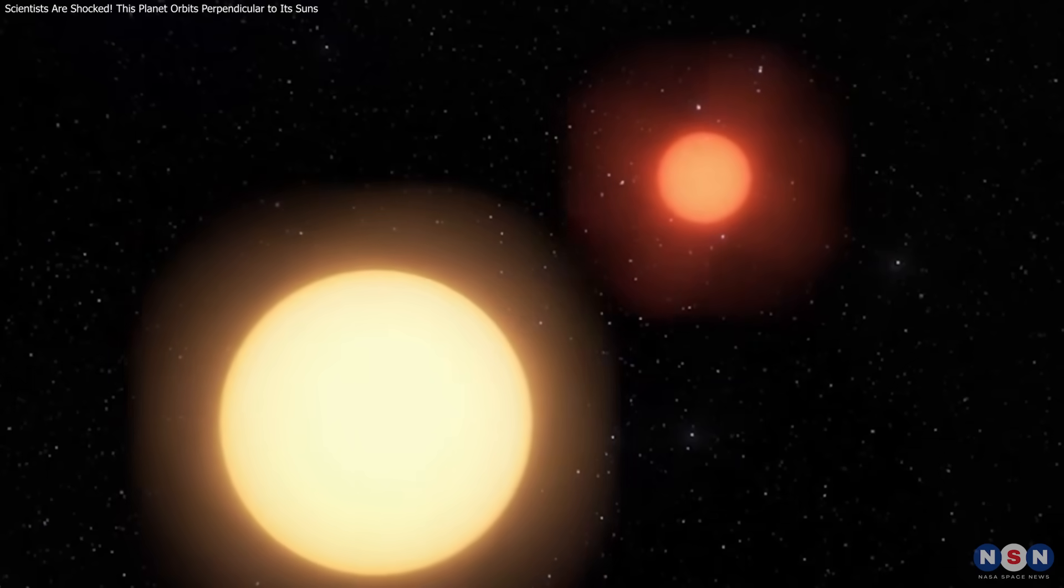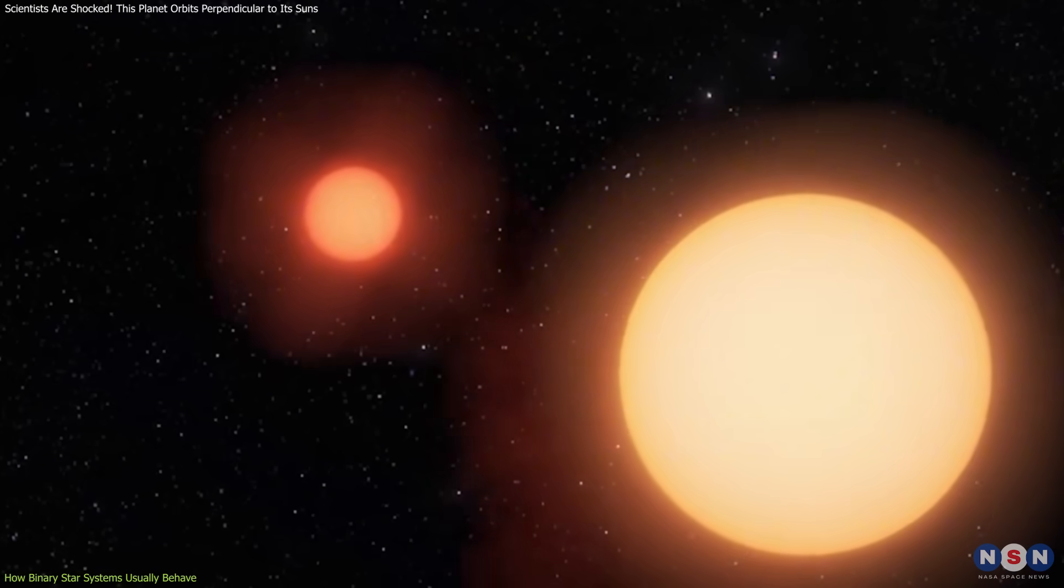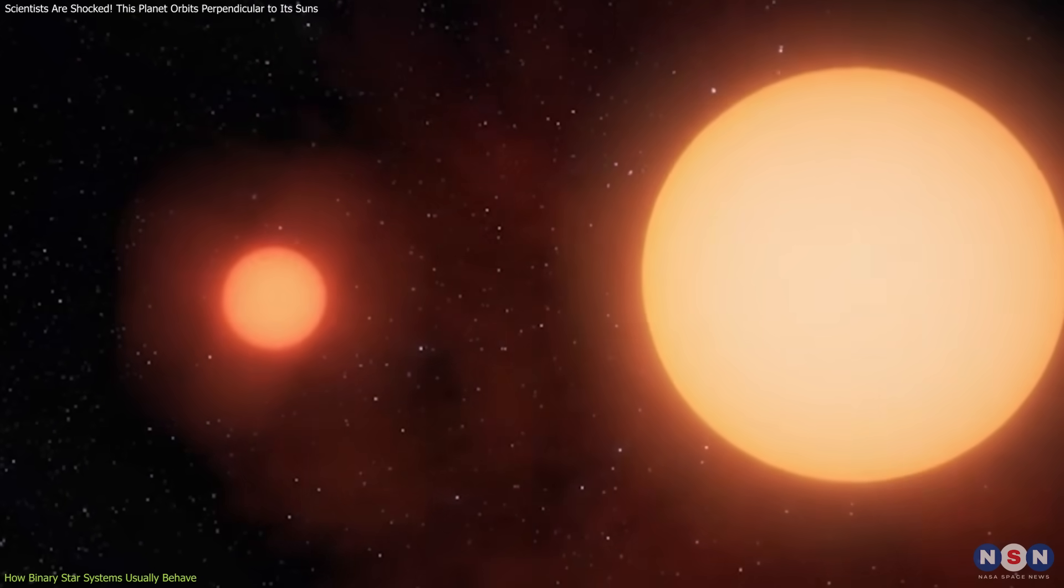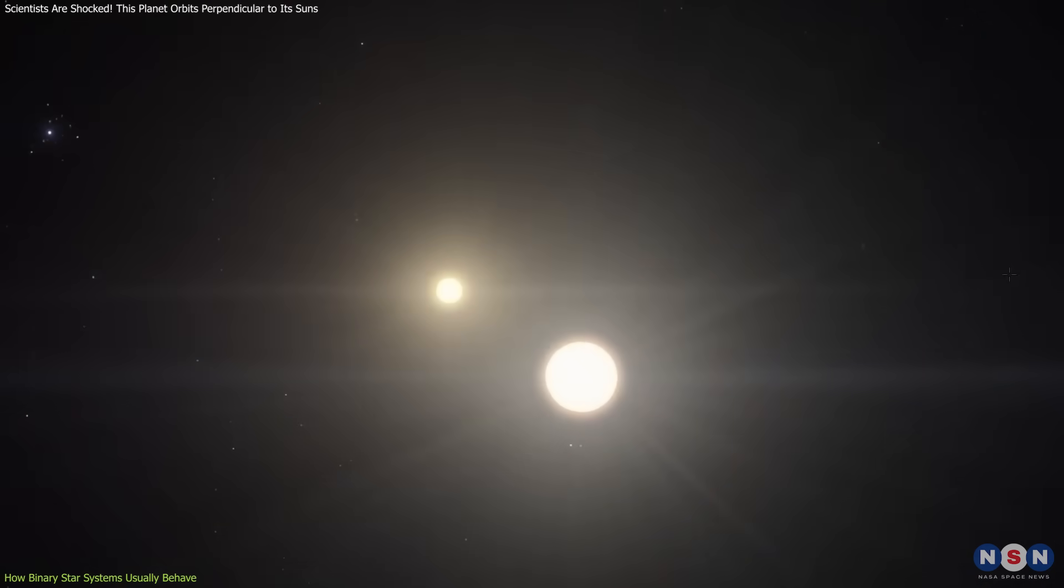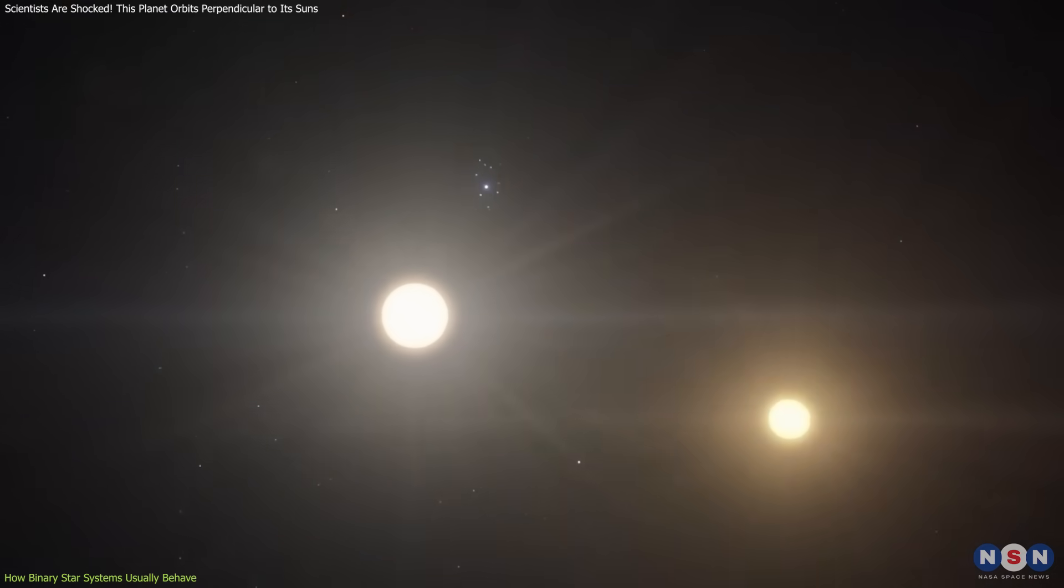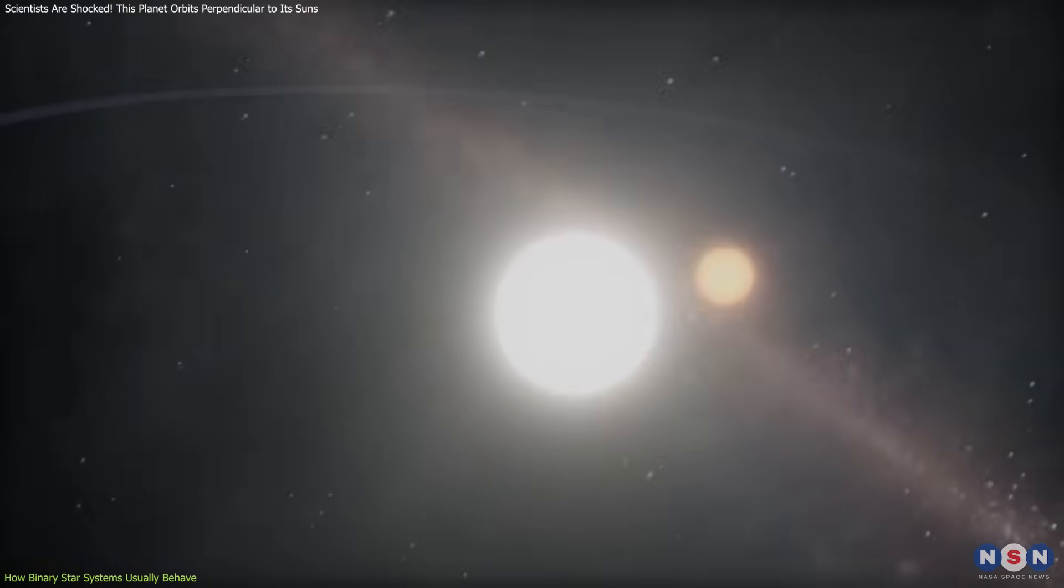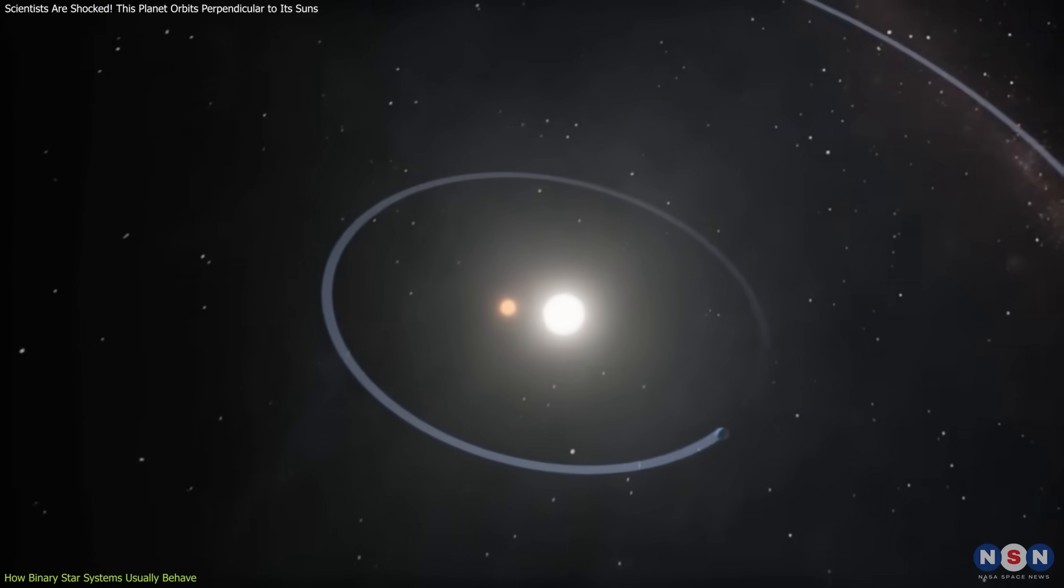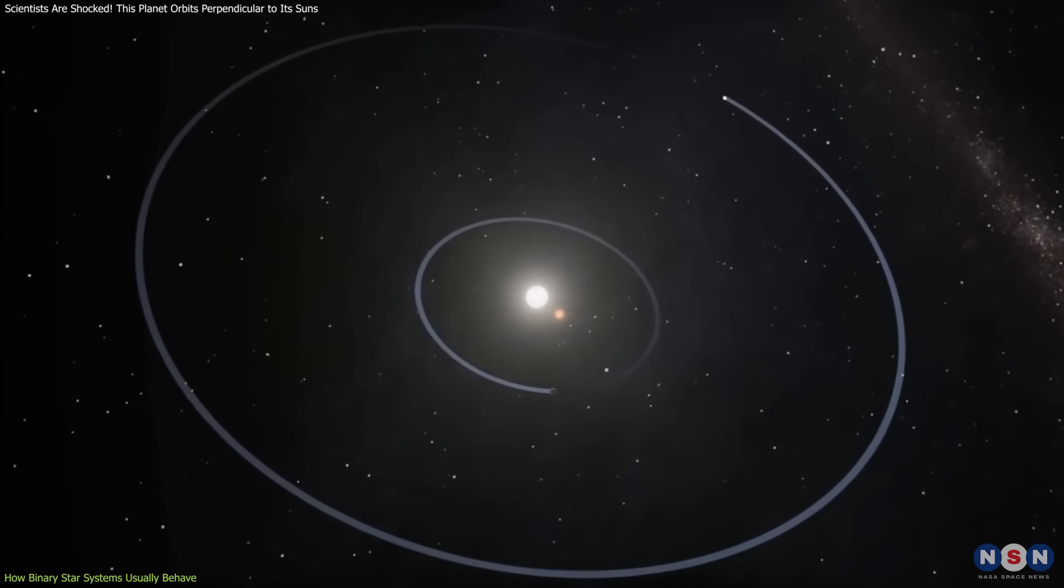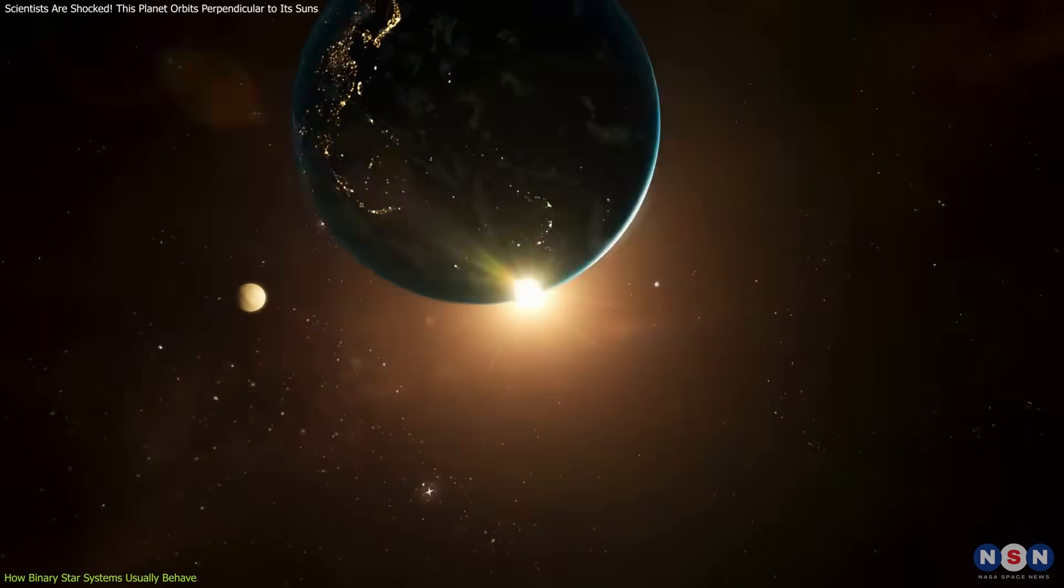Binary star systems are cosmic duets, two stars locked in a gravitational dance, orbiting around a common center of mass. They aren't rare. In fact, studies show that over half of all sun-like stars belong to binary or multiple systems. For planetary systems, this sets up a complex environment where gravitational forces are far more chaotic than around a single star like our sun.